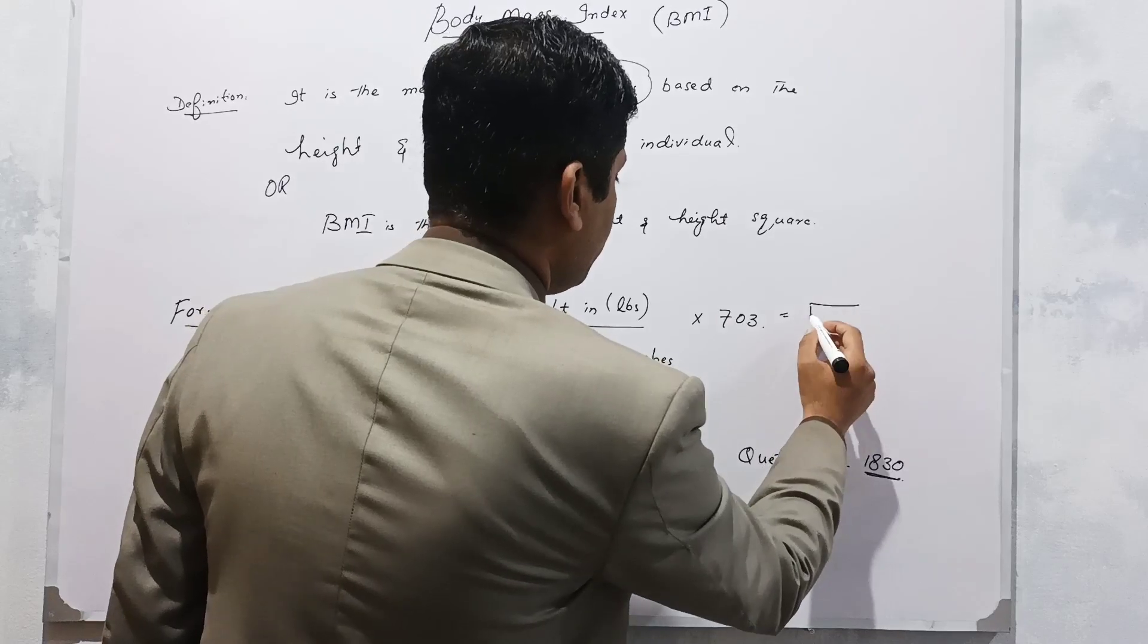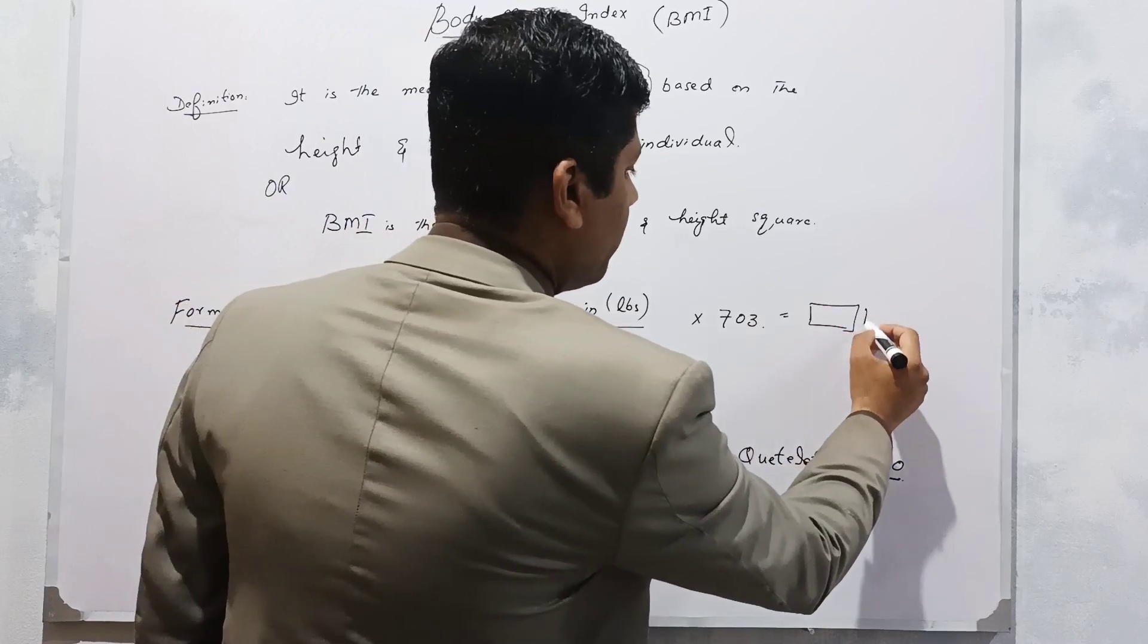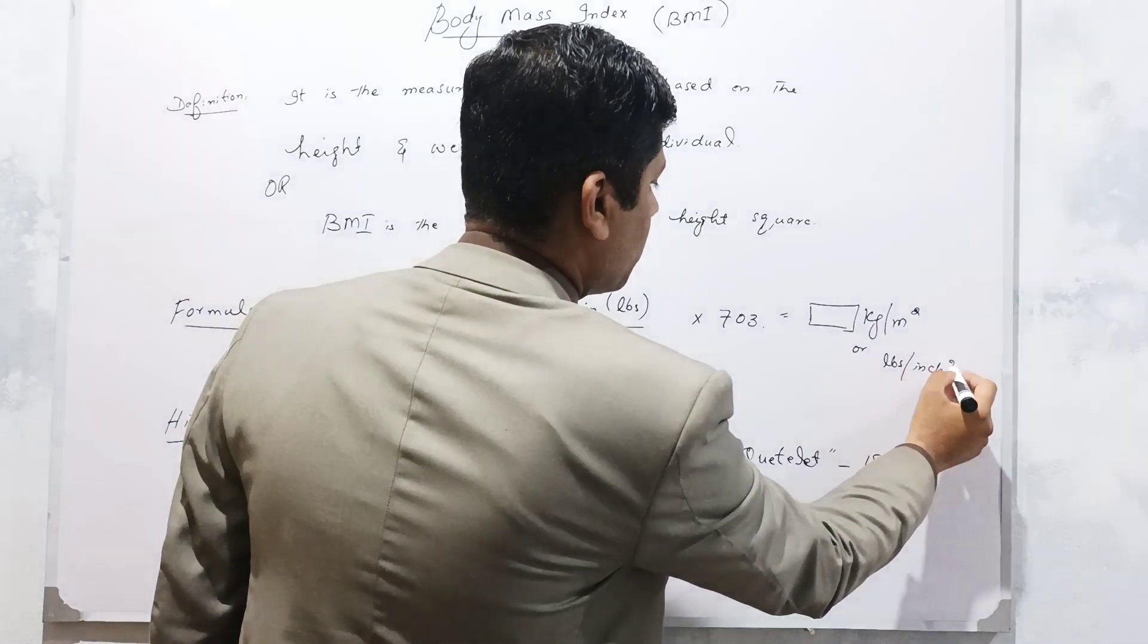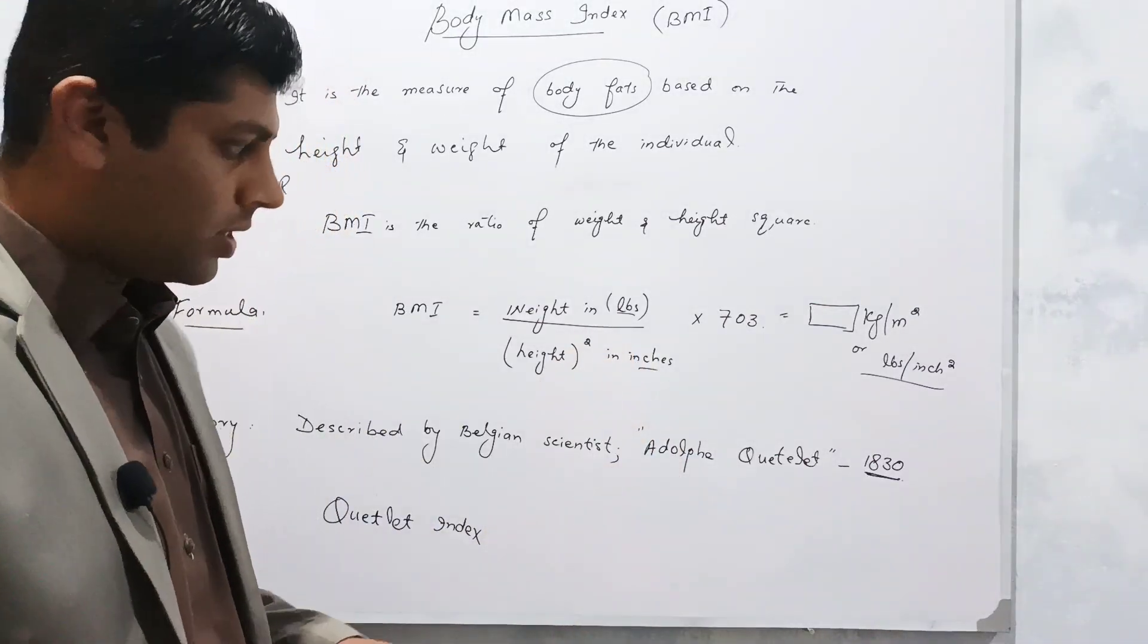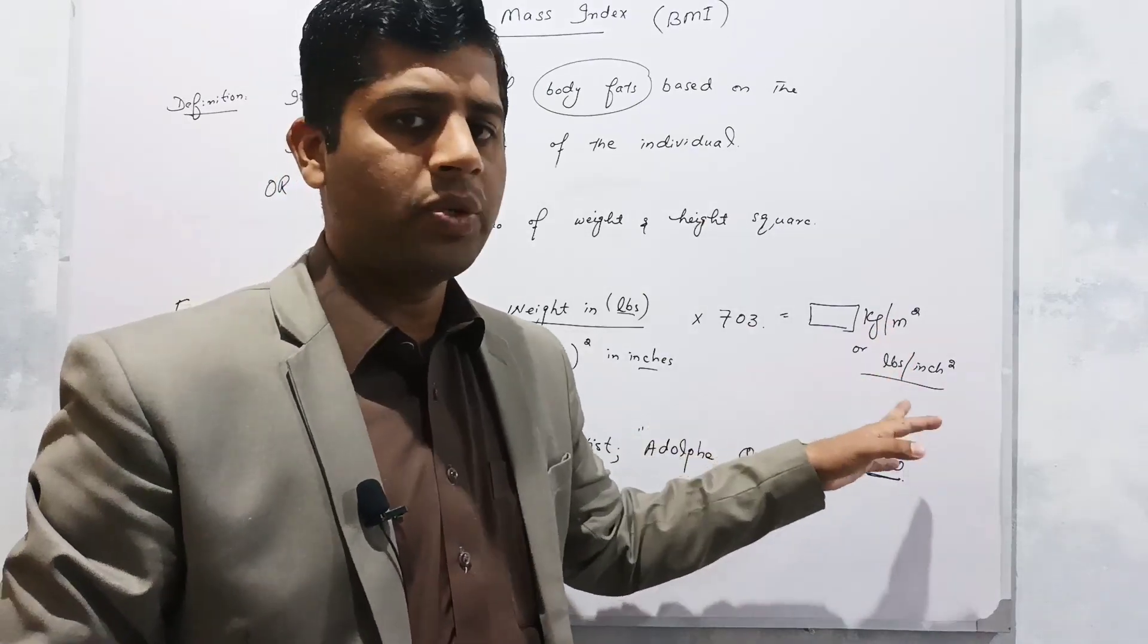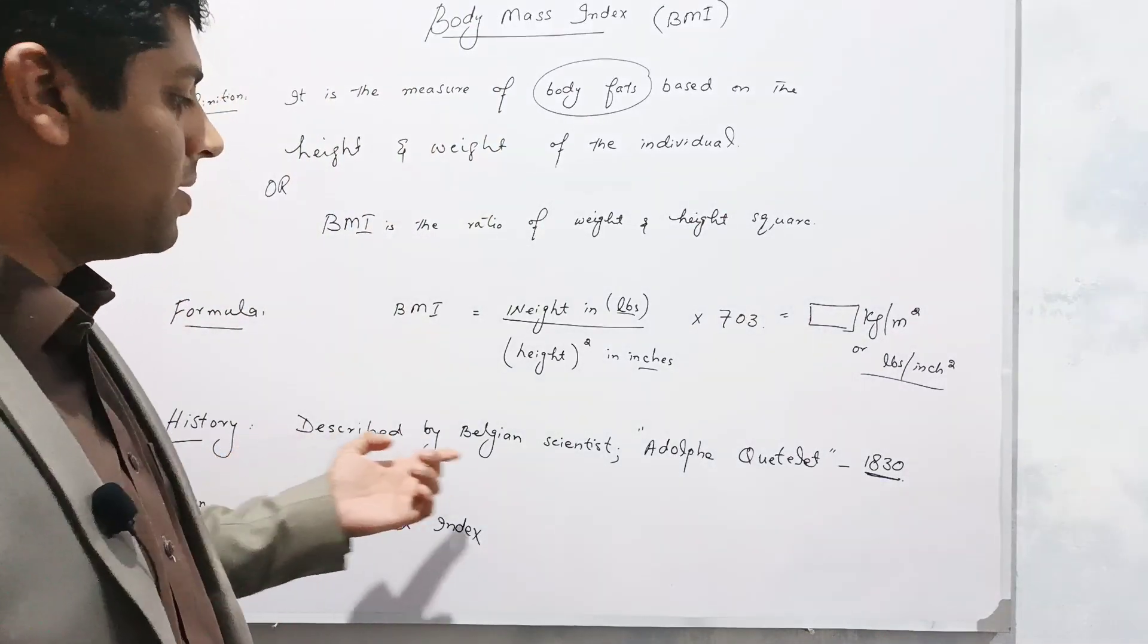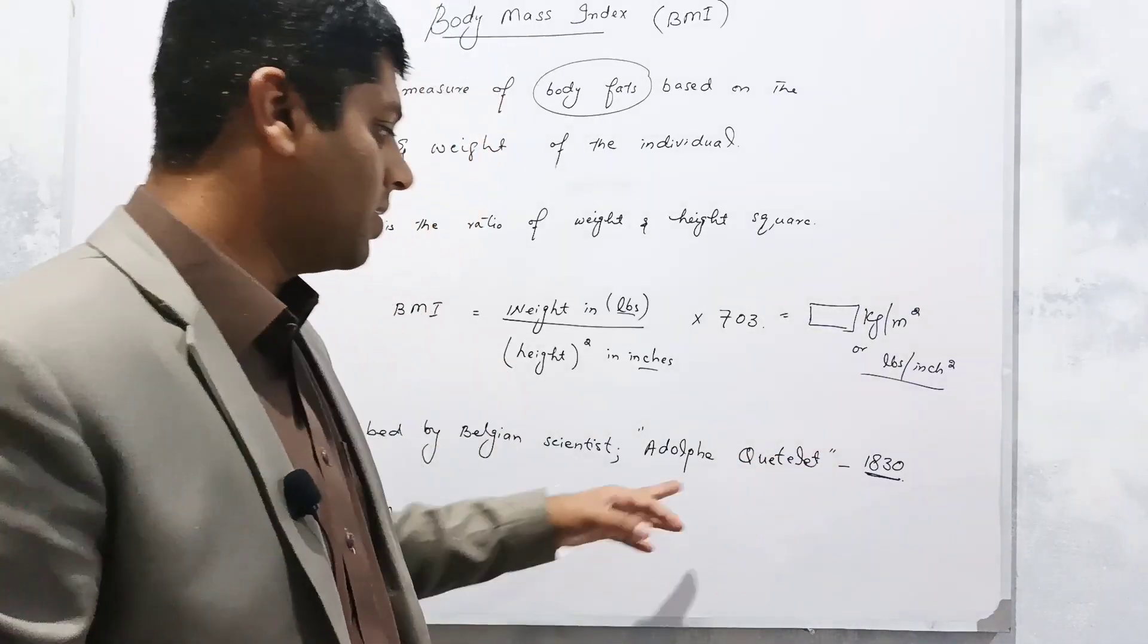The BMI calculated will be in kilogram per meter square or pounds per inches square depending upon the calculations you have put in your formula. Both of these units have the same results. The BMI was first described by Belgian scientist Adolf Quetelet in 1830, therefore the synonym of BMI is Quetelet index.